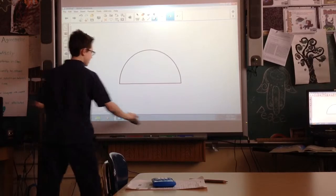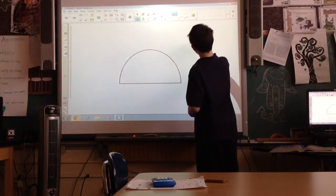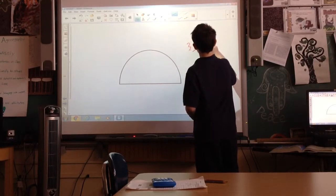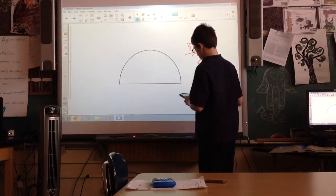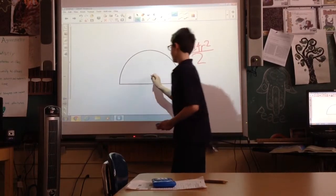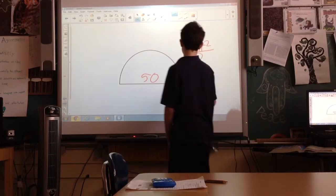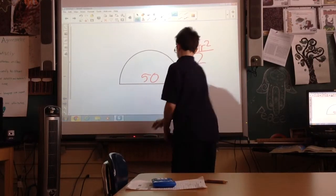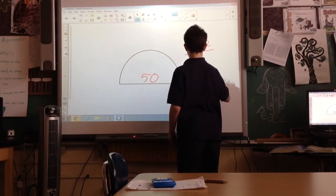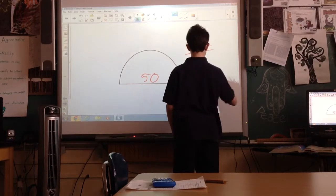This time, we'll do one more problem with semicircle. We'll say the diameter is 50. So 50 divided by 2 is 25, so you've got to take 3.14 times 25 squared, divided by 2.